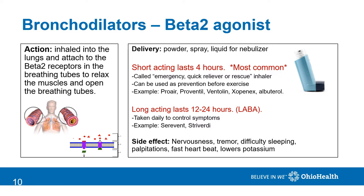Long-acting beta-2 agonists, or LABA, last 12 to 24 hours and must be taken daily to control symptoms. Some examples of this medicine are Serevent or Striverdi. Common side effects for either the short- or long-acting formulation include nervousness, tremor, difficulty sleeping, palpitations, fast heartbeats, and they can also lower potassium if used in high amounts.